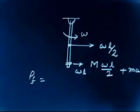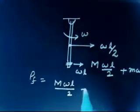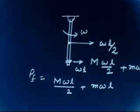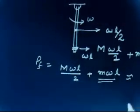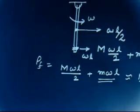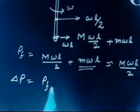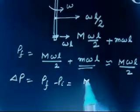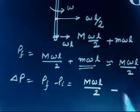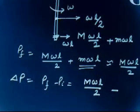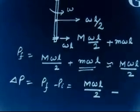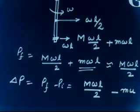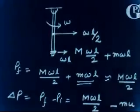The total final momentum is M·omega·L/2 plus m·omega·L. Since m is much smaller than M, the bullet's contribution is negligible. So the final momentum is approximately M·omega·L/2. The change in linear momentum is delta P = P_final minus P_initial = M·omega·L/2 minus m·U.